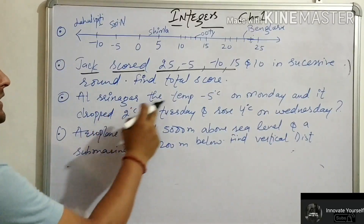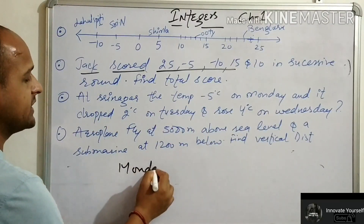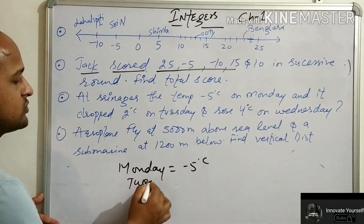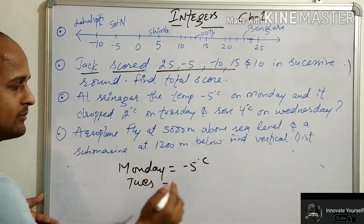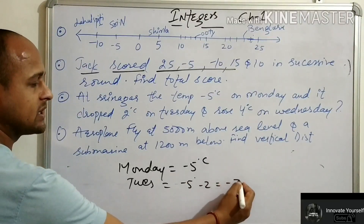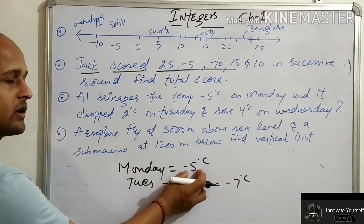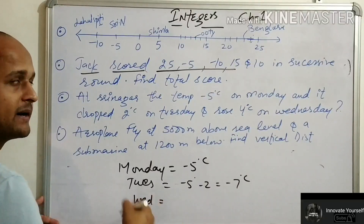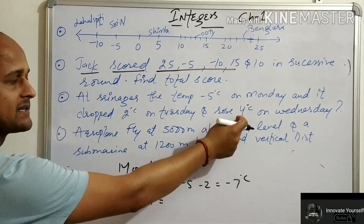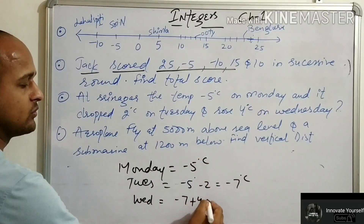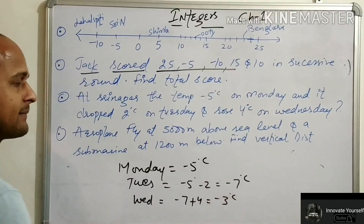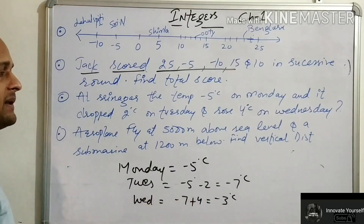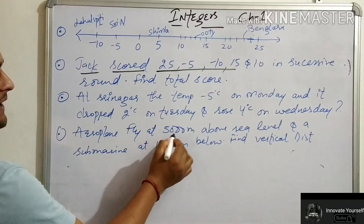Next question: Srinagar temperature on Monday was minus 5 degrees Celsius. Then there was a drop on Tuesday — drop means decrease — by 2 degrees Celsius. So minus 5 minus 2 gives minus 7 degrees Celsius. Then it rose 4 degrees on Wednesday — rose means increase, so we use plus. Minus 7 plus 4: opposite signs, subtract, bigger is 7 so sign is minus — giving minus 3 degrees Celsius. Remember: decrease is negative and increase is positive.